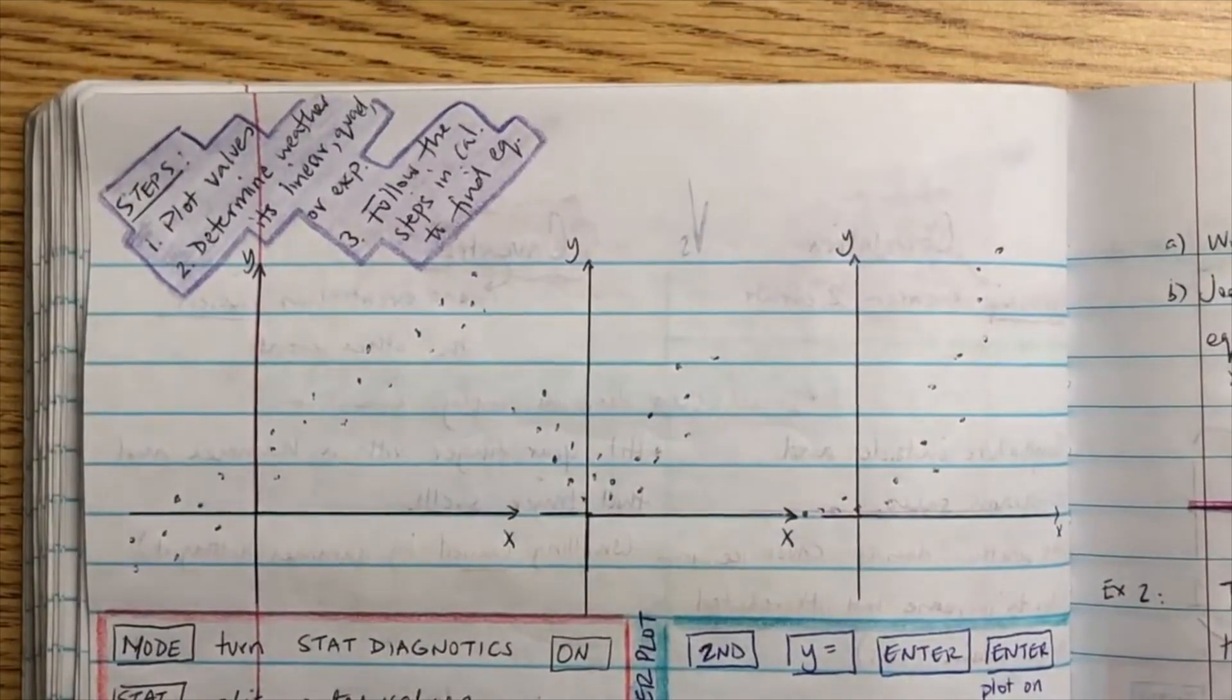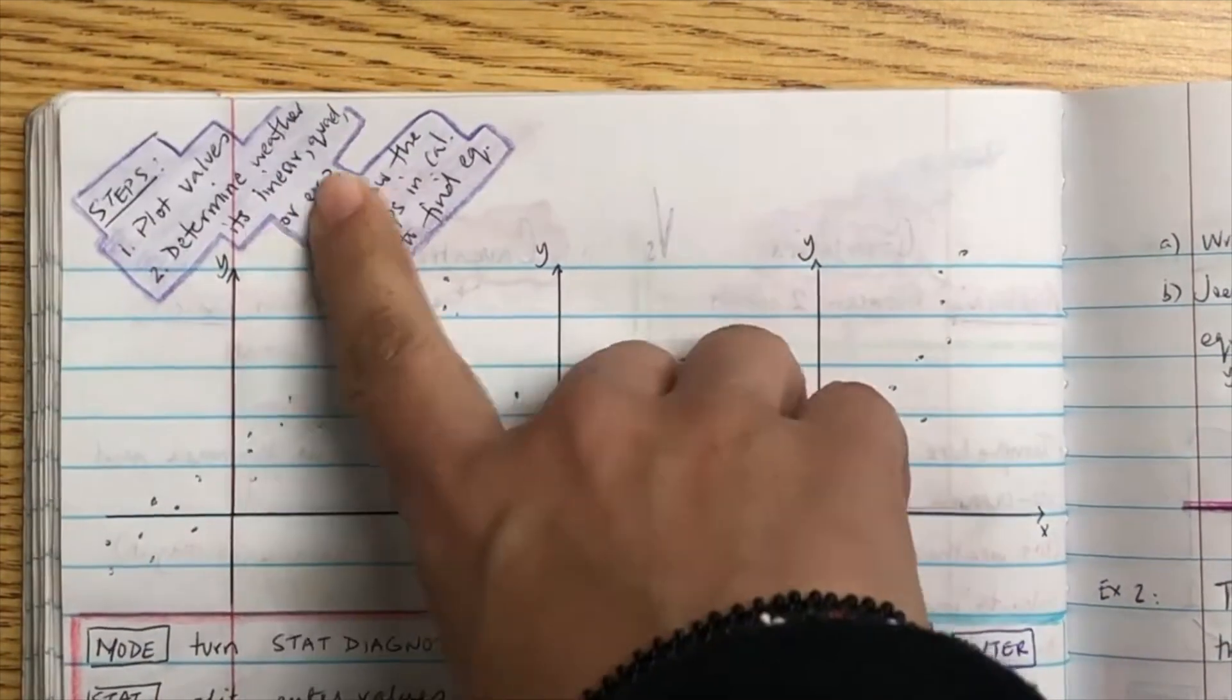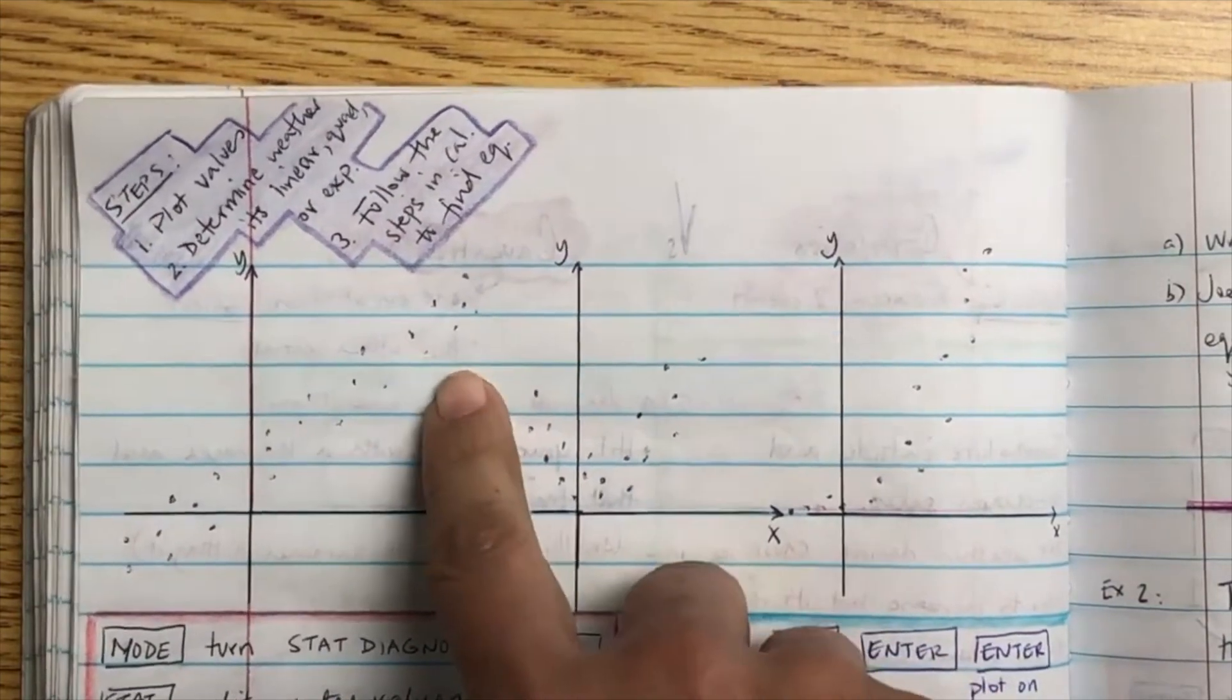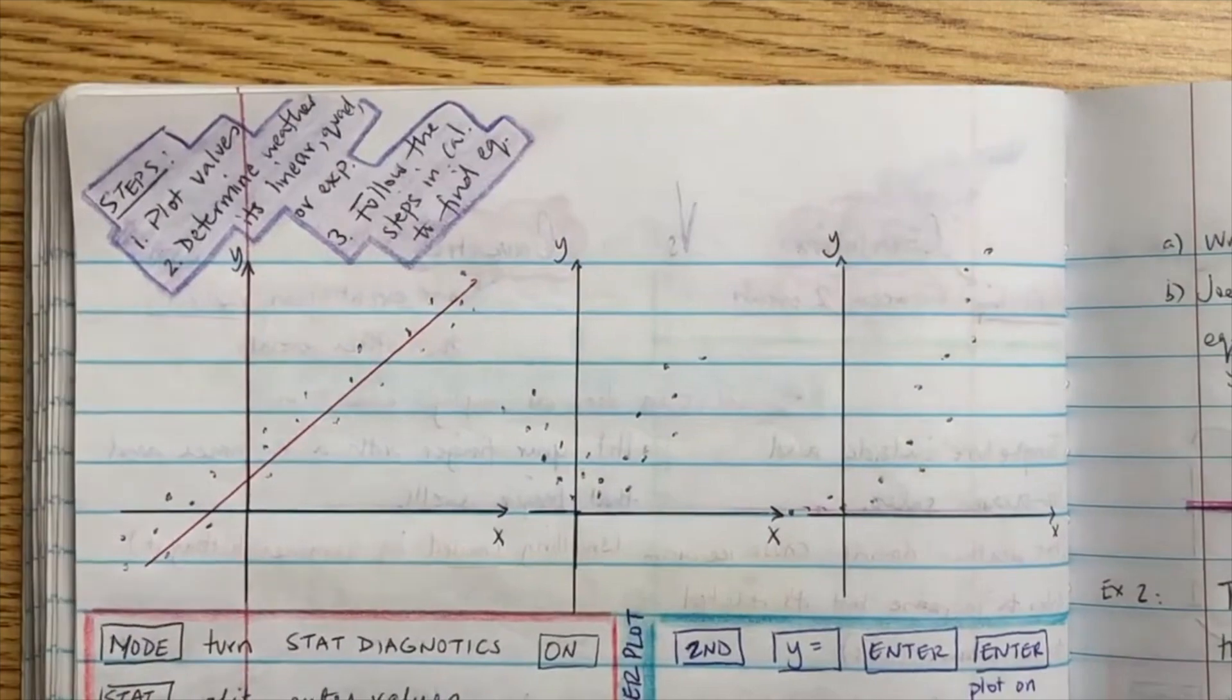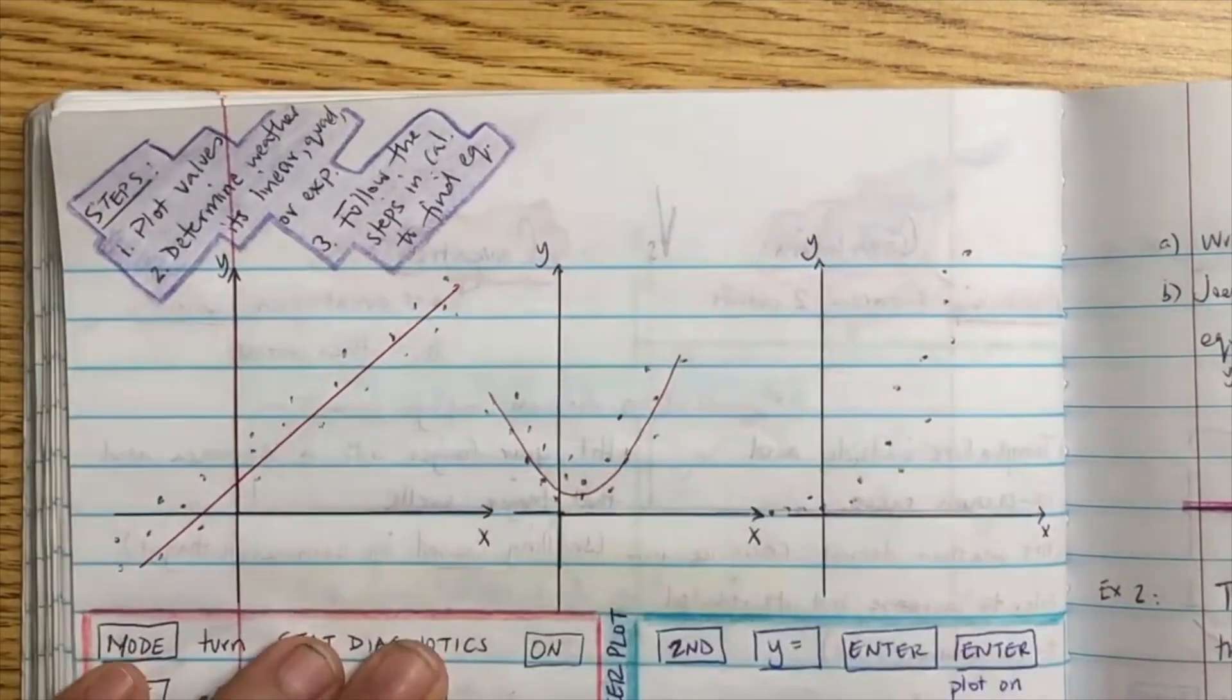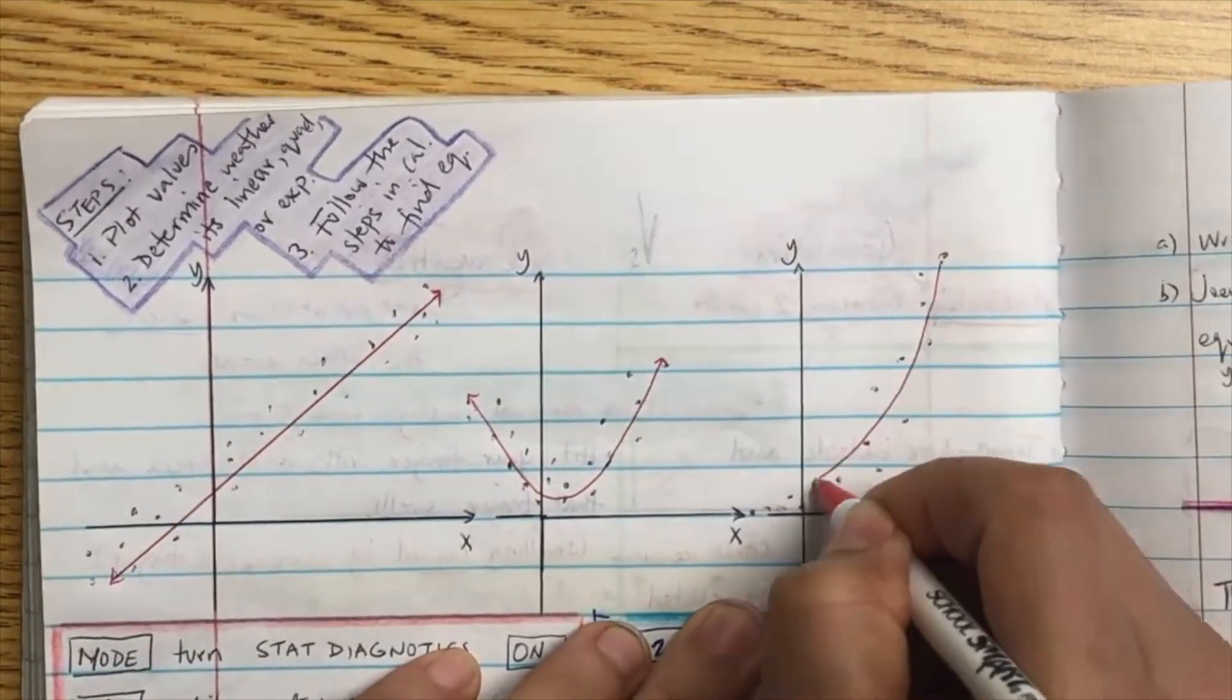All right, so here are your steps. You're going to plot the values, determine whether they're linear, quadratic, or exponential, follow the steps in the calculator, and find the equation. But just looking at it, what can you see? This one's linear, what's this one look like? Quadratic. And what is the last one look like? Exponential.